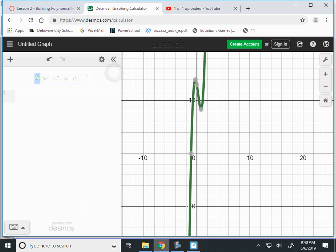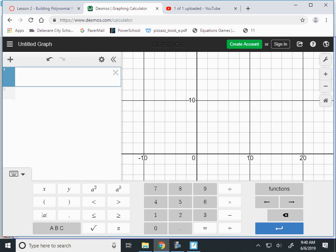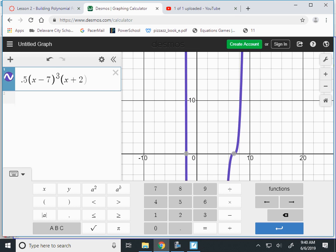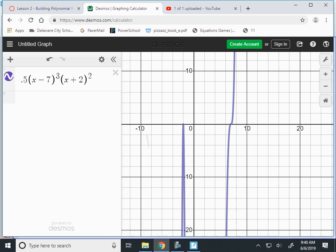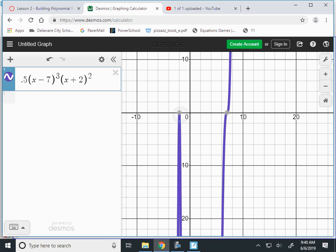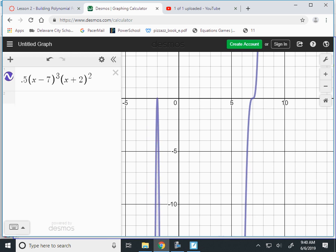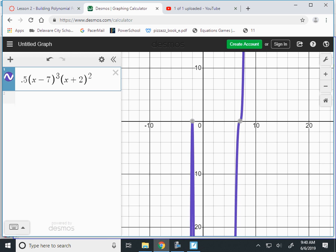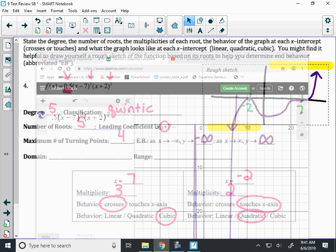Let's look at our picture on Desmos then. All right, so my picture was 0.5 parentheses x minus 7 cubed and then x plus 2 squared. That is kind of what my graph looks like. It's hard to see, but you do bounce off the axis over here and you flatten out at 7. Now, I do have the right shape, so let's do domain and range.